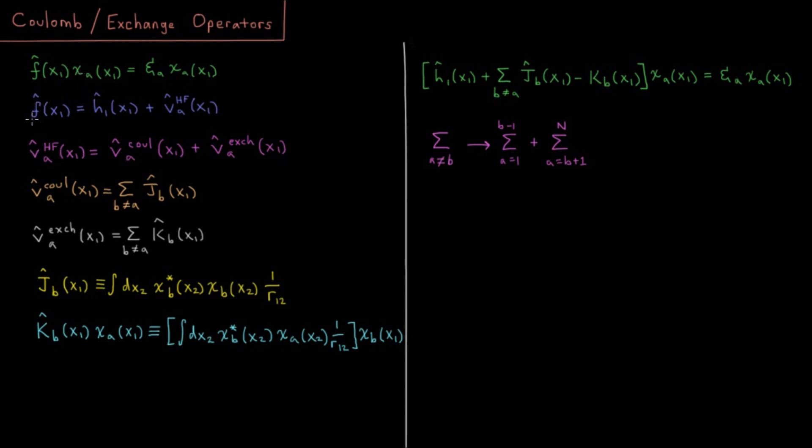We also mentioned that the Fock operator is going to be a sum of two components. It's going to be a sum of a one electron and a two electron, well effectively two electron but we abstract it away as a one electron operator. So we have our core energy or our core Hamiltonian operator which includes for electron one its kinetic energy and its attraction to every other nucleus.